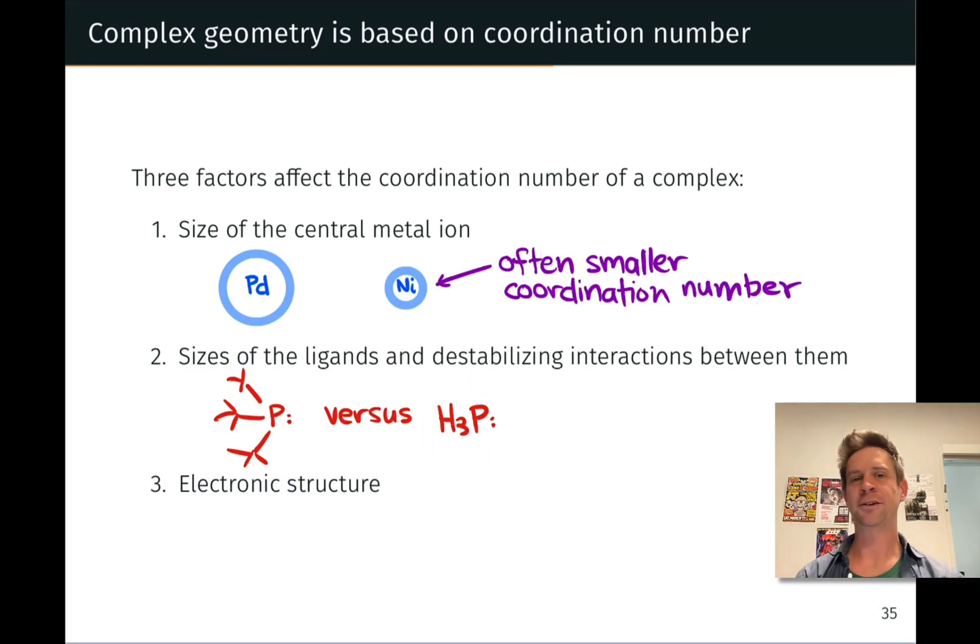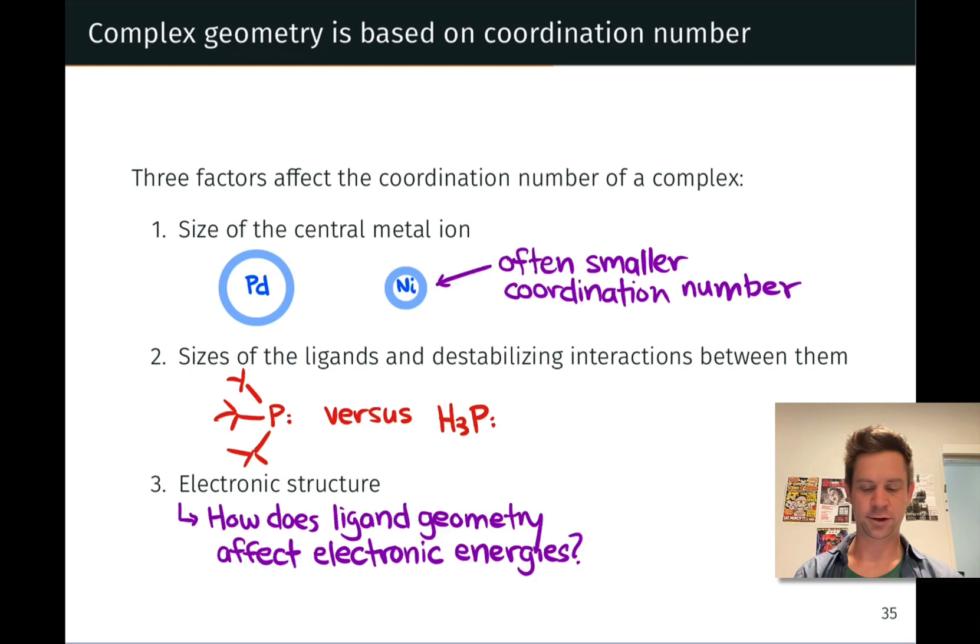The third factor is the most interesting and the newest and perhaps the least intuitive, electronic structure. The arrangement and the number of ligands around a metal center can affect the electronic energies of the d-electrons in the metal center. And we'll dig into this in more detail when we discuss crystal field theory in the near future.